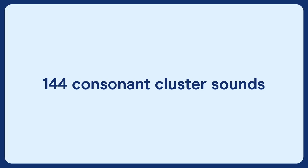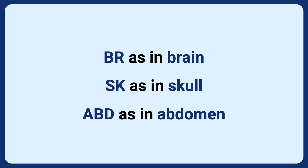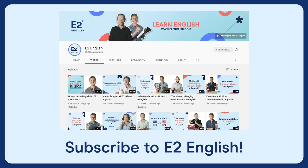There are also quite a few consonant clusters — to be more precise, there are 144 consonant cluster sounds in English. These are sounds that contain two or sometimes three consonants joined together, like 'br' as in brain, 'sk' as in skull, and 'abd' as in abdomen. If you're worried about your pronunciation, subscribe to the E2 English YouTube channel — it has fundamental skill-building videos including videos on English pronunciation.